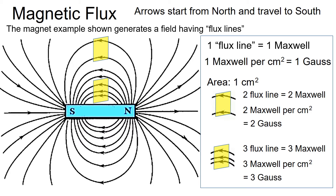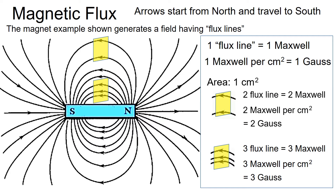This illustration shows the formation of flux lines, where each line represents one Maxwell. For every one Maxwell per square centimeter, we denote a magnetic flux density of one Gauss. Gauss serve as an indicator of magnetic flux density measured in Maxwell per unit area. Therefore, if two flux lines exist within one square centimeter, the magnetic flux density equals two Gauss.